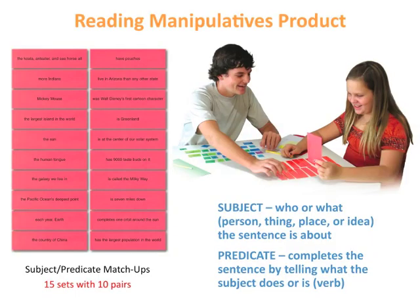A sentence is a group of words that expresses a complete thought. It contains two essential parts: a subject and a predicate. In this manipulative, students match the subjects to the predicates.